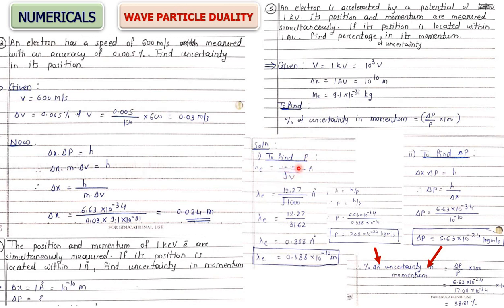Then find Δp using Heisenberg's principle: Δx · Δp = h, so Δp = h/Δx. With both Δp and p known, calculate (Δp/p) × 100 to get the percentage uncertainty in momentum.